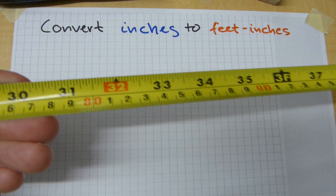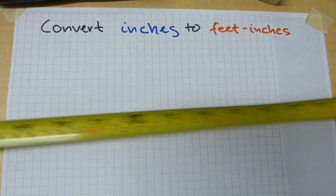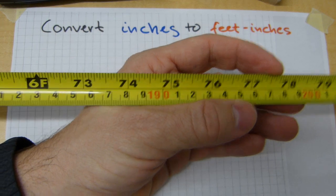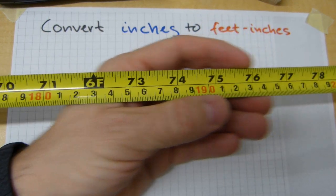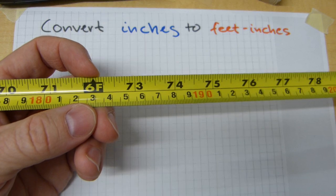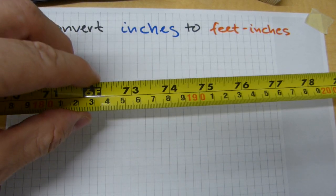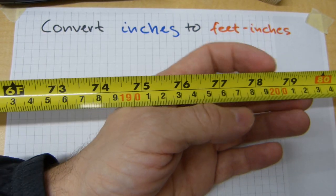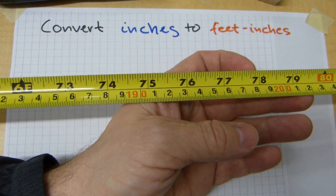This one here, 78 inches is how many feet, how many inches. Look to the left here again. Find the nearest foot mark, 6 feet and count off the whole number of inches, 1, 2, 3, 4, 5, 6. 6 inches there. 6 foot 6 is 78 inches.